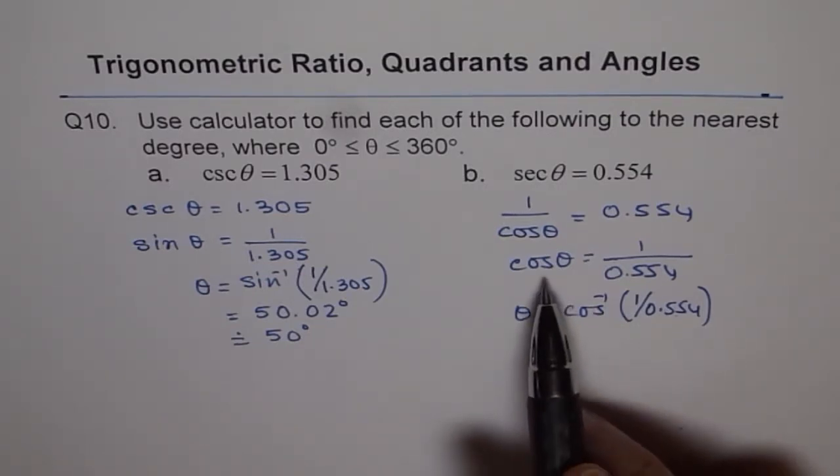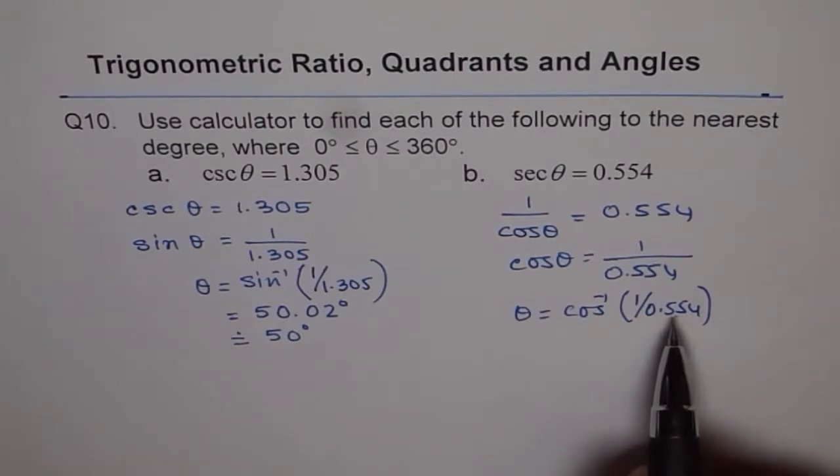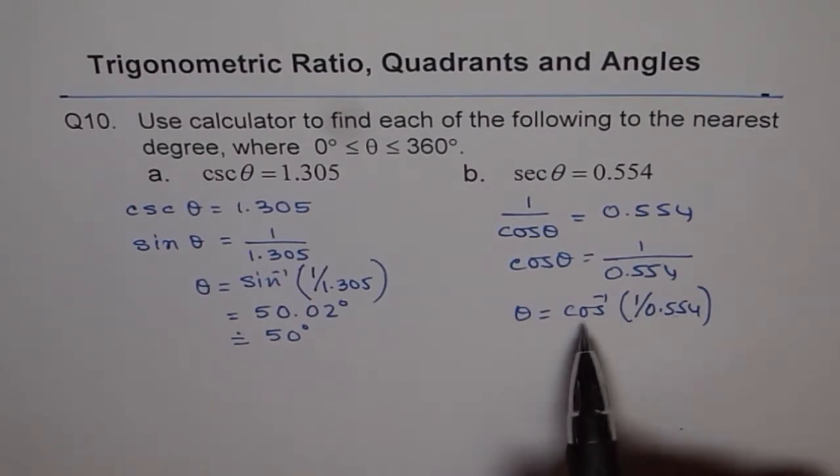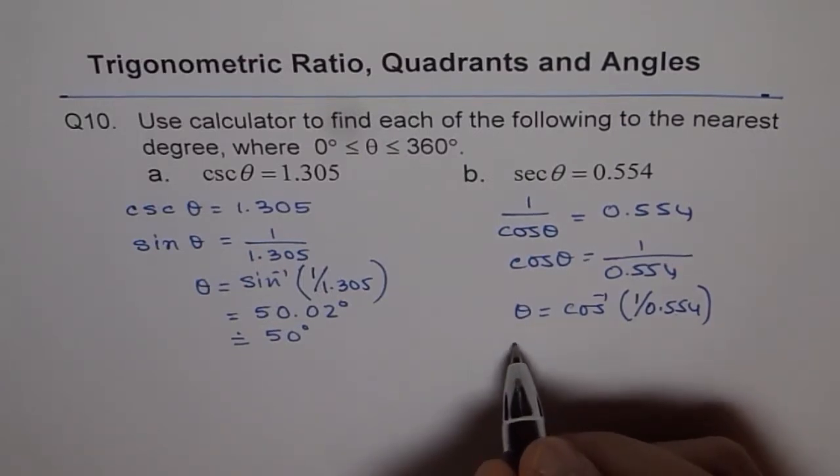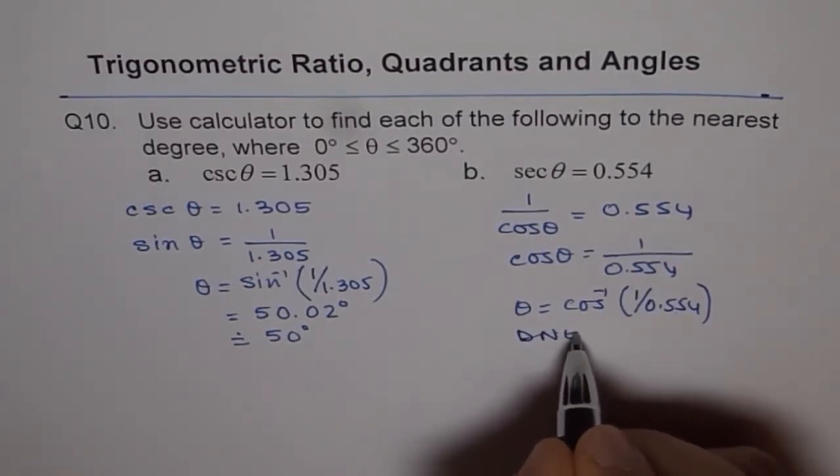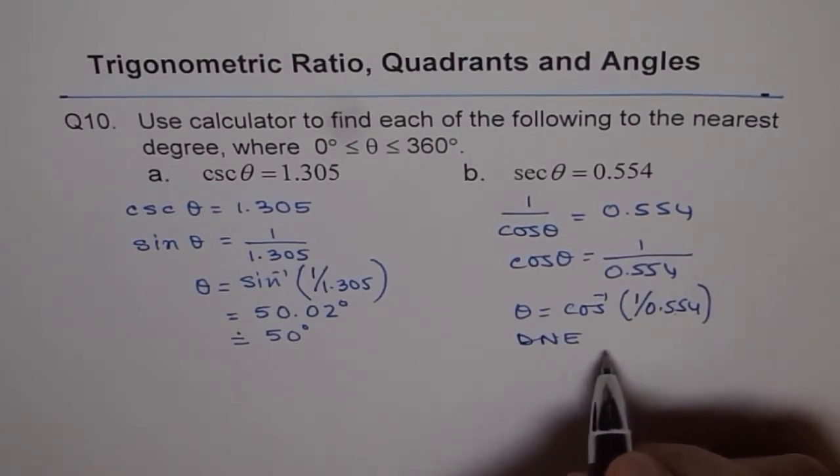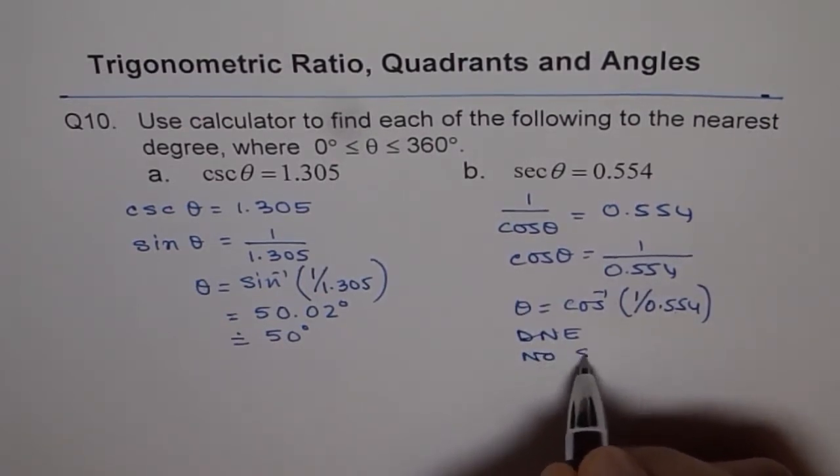You'll get an error. Since cosine theta cannot be more than 1, the range for cosine theta is only from minus 1 to plus 1. So here it does not exist. We get an error here. So there is no solution for this. No solution. Do you understand?